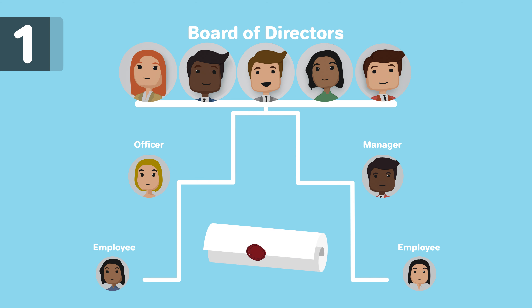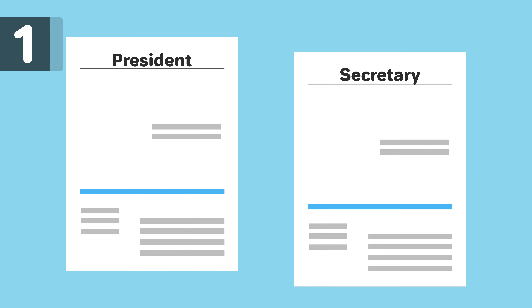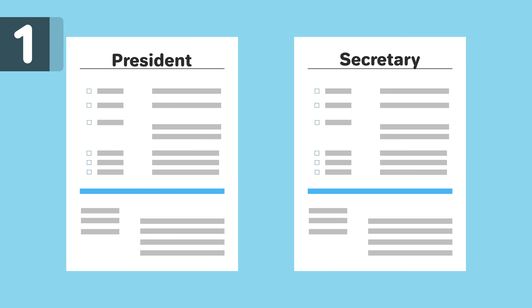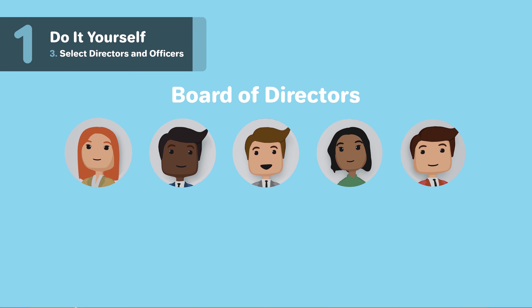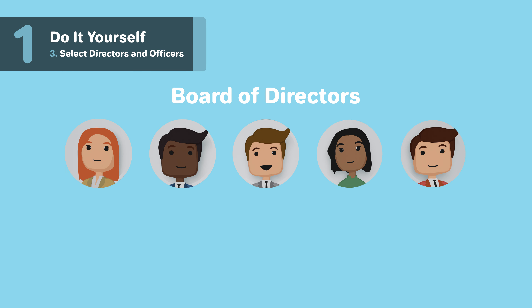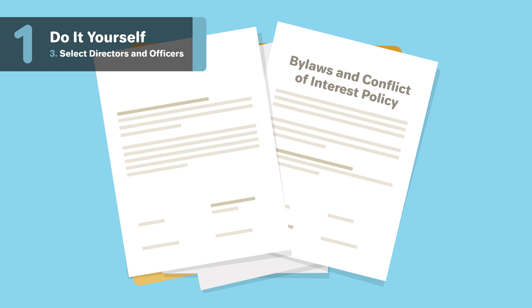The board typically creates the policies that govern the nonprofit. They also oversee management-level hiring, such as the company officers. The officers of a nonprofit, such as the president or secretary, are individuals with responsibilities and the authority to execute based on their job description. Together, the officers and board will come together to make up the organizational structure of your nonprofit. An officer may also be on the board of directors and serve both roles, if allowed by the organizational bylaws.